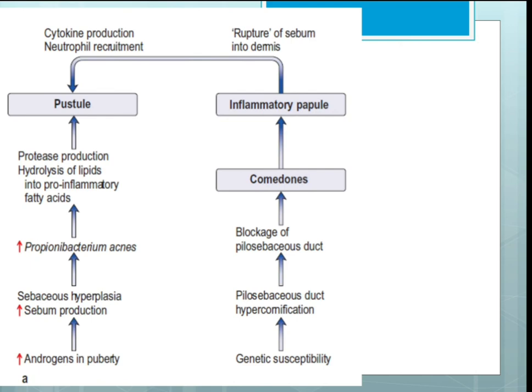Looking at the mechanism: androgen levels increase during puberty, leading to increased sebum production and sebaceous hyperplasia. This increased sebum promotes proliferation of Propionibacterium acnes, which produces proteases that hydrolyze lipids into pro-inflammatory fatty acids, ultimately resulting in the formation of a pustule.